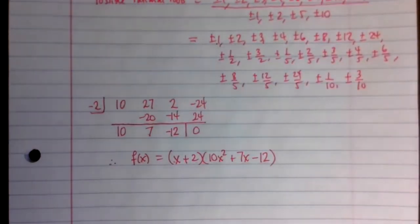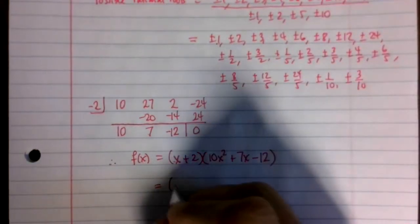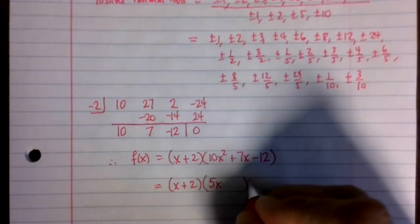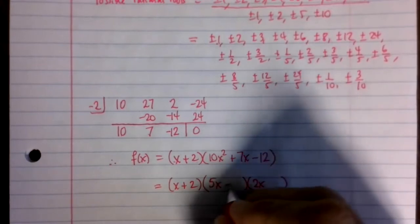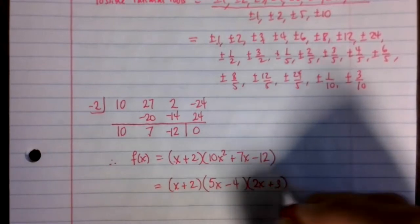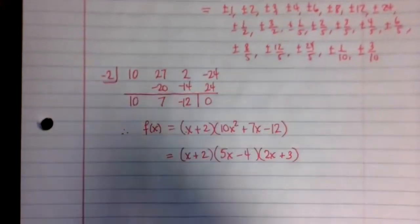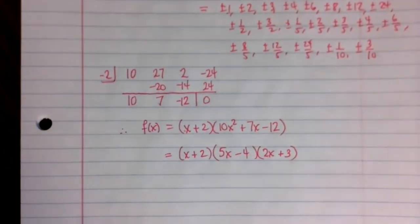In this case, this actually factors. And so the way this factors is going to be x plus 2. And this will factor as 5x, 2x minus 4 and plus 3. So 10x². Here I multiply, I get negative 12. Here I get plus 15, minus 8 for plus 7. And so that is the factorization.